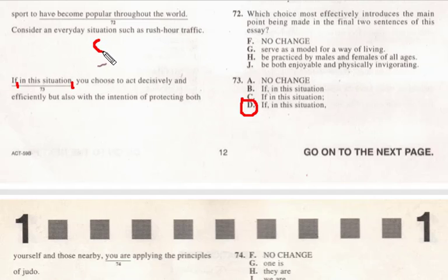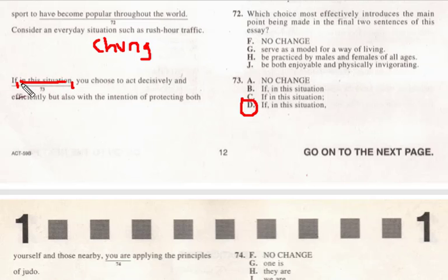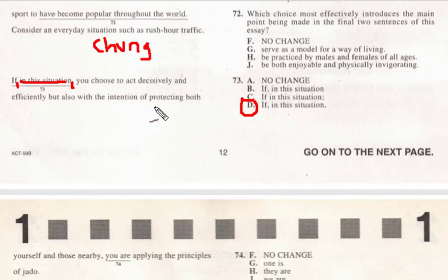Right away, when we see two commas, we're thinking it's either Chung or it could be Kranz Island. Let's try both. Chung tells us that what's between two commas can be crossed out and the sentence still works: 'If you choose to act decisively and effectively but also with an intention of protecting both yourself and those nearby, you are applying the principles of...' — that works. Chung confirmed.